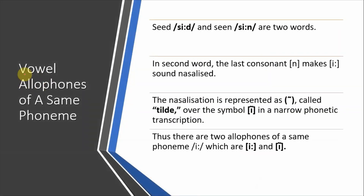Just as we have seen allophones in consonants, there are also allophones in vowels. For example, take the word 'seed' — the vowel sound you hear is /iː/. And in 'scene,' the same /iː/ is present. Both of these have the same vowel sound.